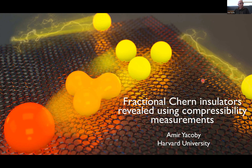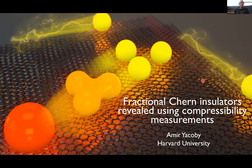Condensed matter systems offer the remarkable possibility of observing fractionalized excitations. This means that the underlying fundamental particles in the system no longer resemble the electrons that constitute it, but rather very different types of excitations exist. Perhaps the more familiar example is the fractional quantum Hall effect, where large magnetic fields and very low temperatures allow one to observe fractionalized excitations.